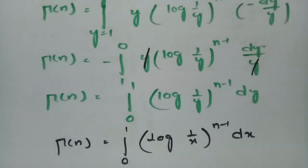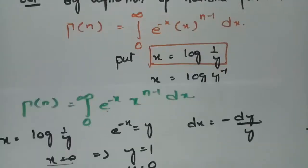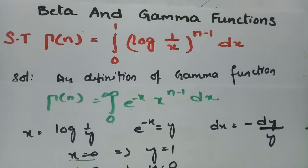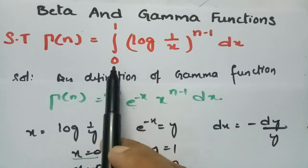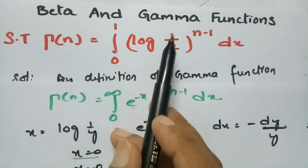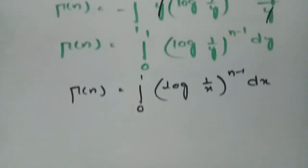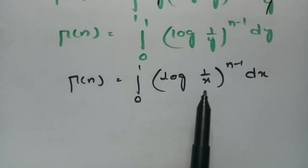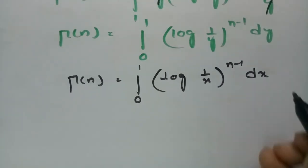Therefore, gamma n is equal to the integral from 0 to 1 of log(1/x) to the power n minus 1 into dx. And this is exactly what was asked to show.